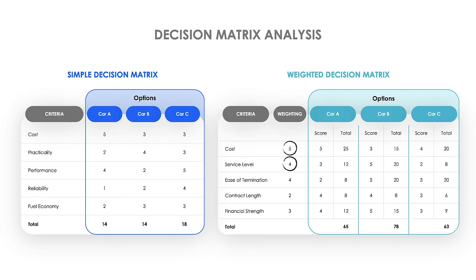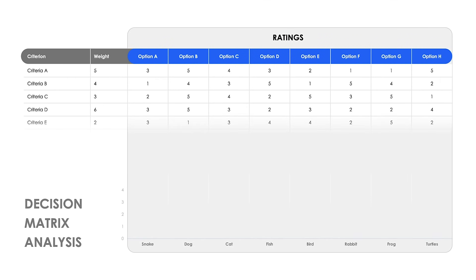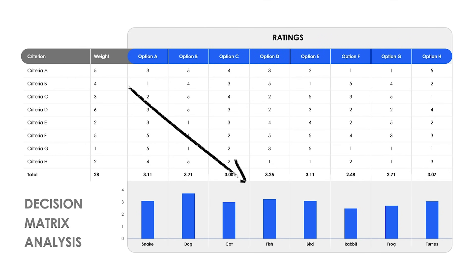If the cost score is high on a decision but the rest of the criteria is weighted lower, it will bring the entire score down, which could lead to a different decision depending on what's most important to you. Once all these weighted scores are tallied up, you can use a graph visualization to see how they all stack up and help you make your decision.